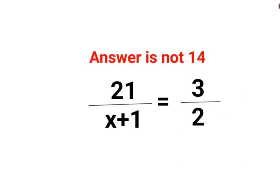Welcome everyone. So yes, a lot of people thought that the answer for this one is supposed to be 14 because they thought that 21 upon x plus 1 equals to 3 upon 2.